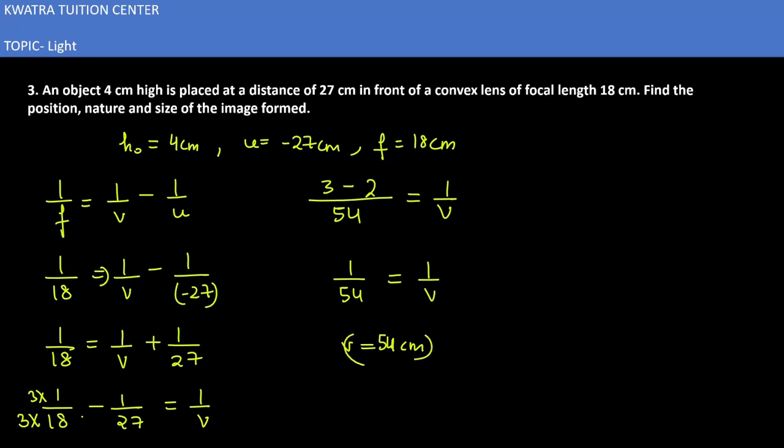V is there now. The first part is done. We can understand that the distance of the image is 54cm, so the distance of the image will be greater. And the distance of the image will be on the other side of the lens, where our object is placed in the opposite direction.